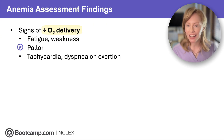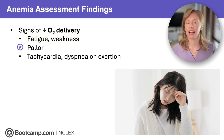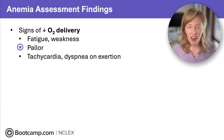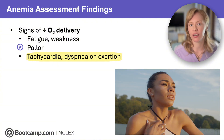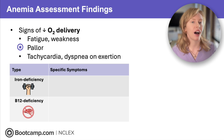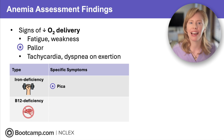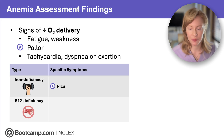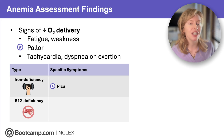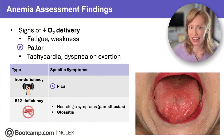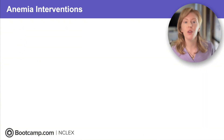In anemia we have decreased oxygen delivery to the tissues, so we'll see fatigue and weakness. They'll have pallor because of impaired oxygen perfusion to the skin, and because the body is trying to compensate for that hypoxia, they'll have tachycardia and dyspnea on exertion. Iron deficiency anemia causes something called pica — commonly a pregnant woman craving non-food items like ice or dirt. Because B12 is necessary for neurologic function, B12 deficiency can cause neurologic symptoms like paresthesias and a beefy red tongue called glossitis.